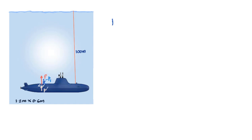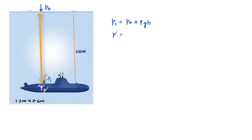p1 is the sum of atmospheric pressure p₀ from the top plus the pressure due to the water column, ρgh, where h is 100 meters. We also know that p_dash is nothing but the atmospheric pressure acting from inside the submarine.